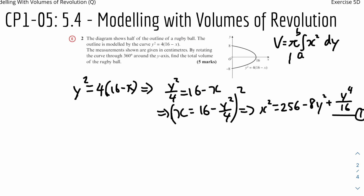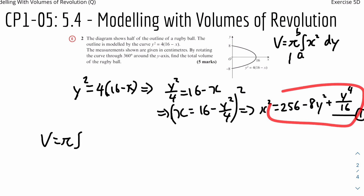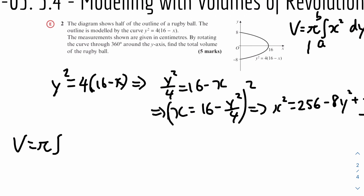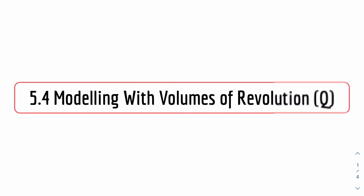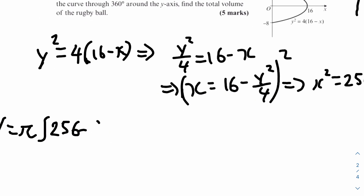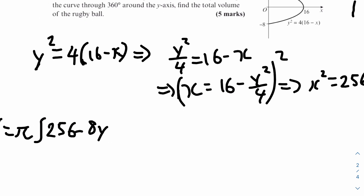We can now find the volume. Volume equals pi times the integral of x squared, which we already found. So: 256 minus 8y squared plus y to the power of 4 over 16, dy. The bounds are from minus 8 to 8.